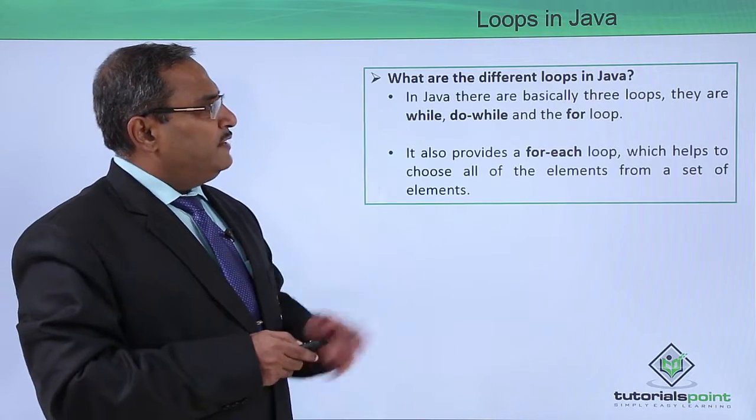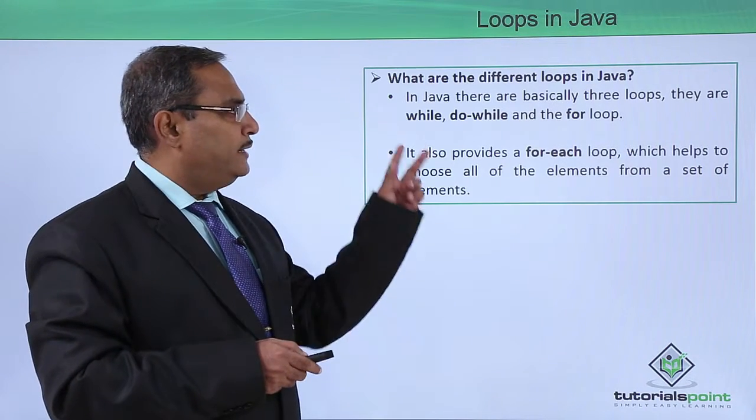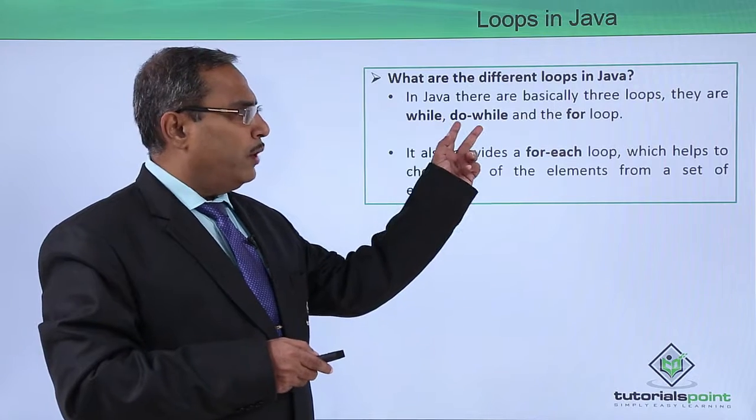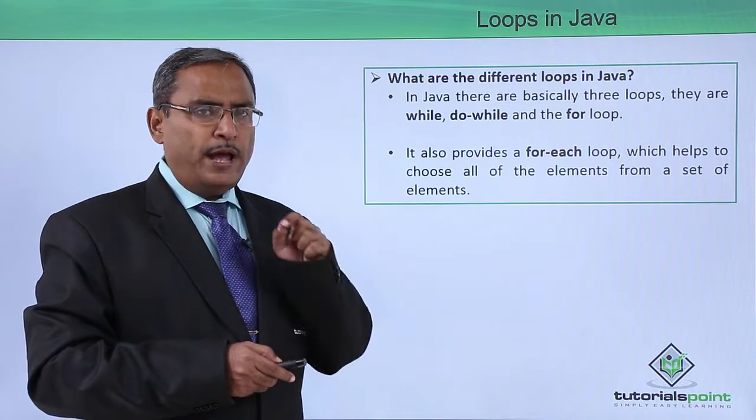What are the different loops in Java? In Java, there are basically three loops: while, do-while, and for loop.